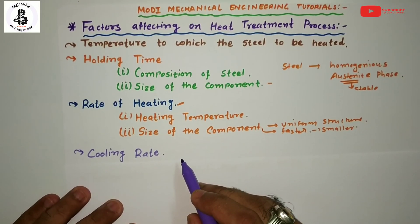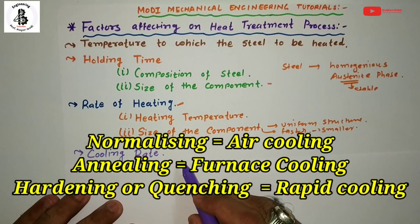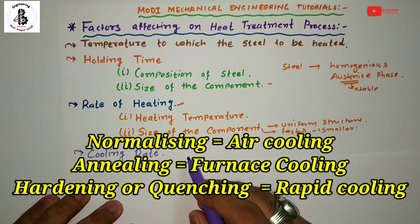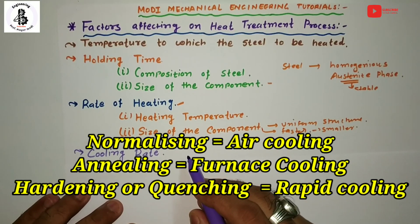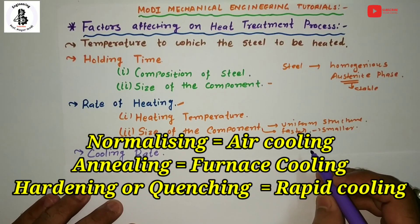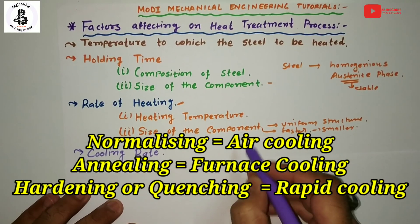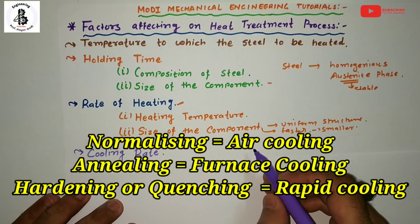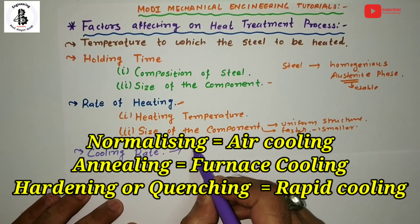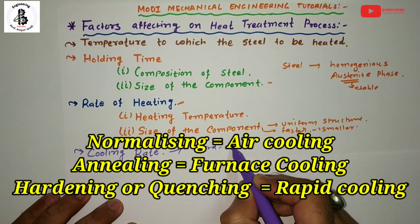There are various processes: in normalizing, it will be air cooling. In annealing, it will be furnace cooling. In quenching, it will be water quenching, oil quenching, or rapid cooling. In the case of normalizing and annealing, you will get the soft phase at room temperature. But if you go for the quenching process such as water quenching, you will get a hard structure, known as a martensitic kind of structure. According to the requirement of your properties, cooling is an important part as the third stage of the heat treatment process.